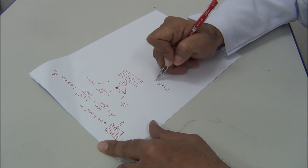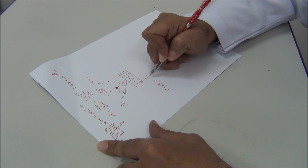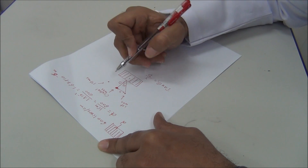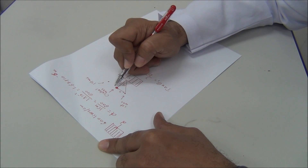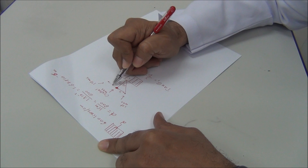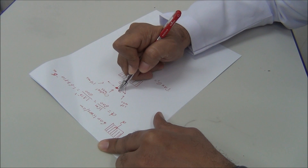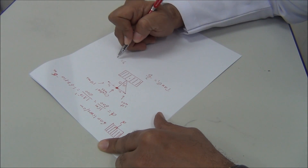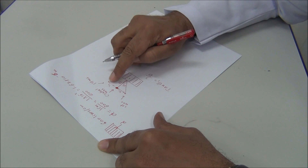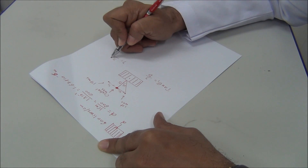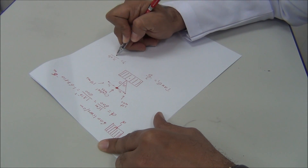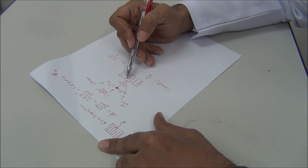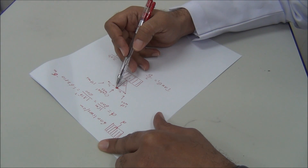Then theta 1 equals Y over D. We measure Y1 and Y2 — the distances from the central maximum to each first maximum — and Y equals the average of Y1 and Y2, which is Y1 plus Y2 over 2. D is the distance between the diffraction grating and the central maximum.